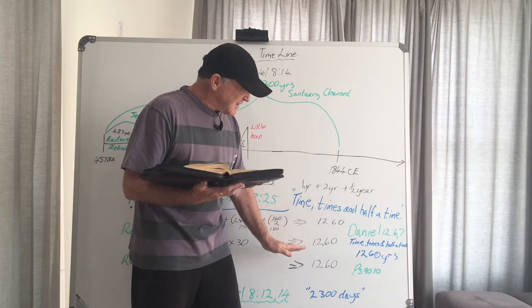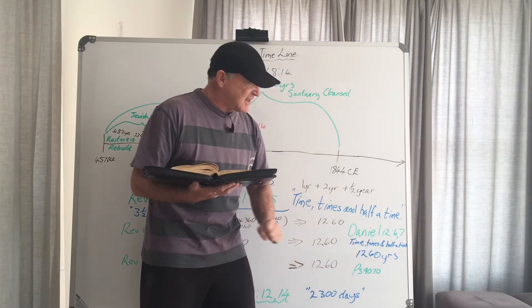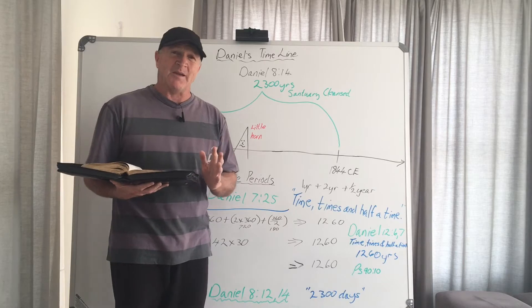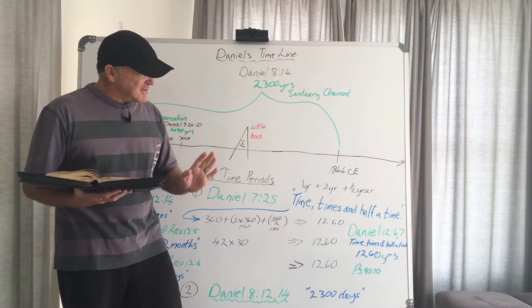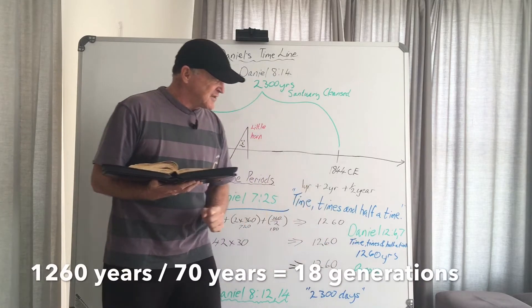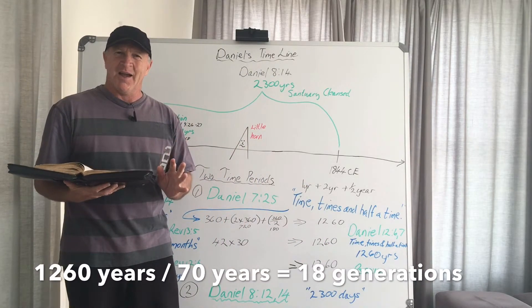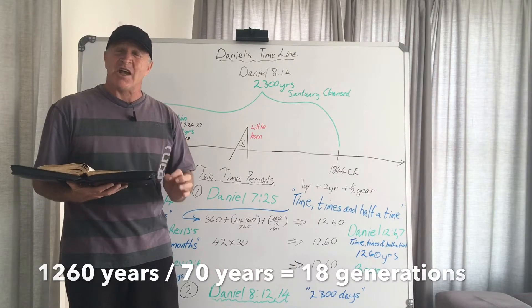So if we take one generation to be 70 years, and we take 70 years and we divide it into 1,260 years, we will determine how many generations that will be. So if you pull out your calculators and you take 70 divided into 1,260 years, you will find an amazing thing, and that is that it is 18 generations.